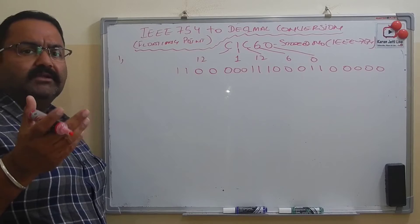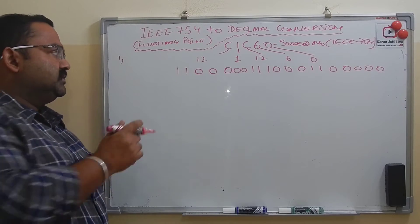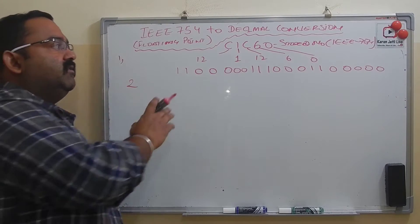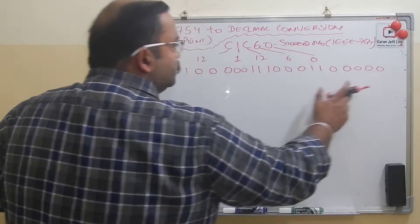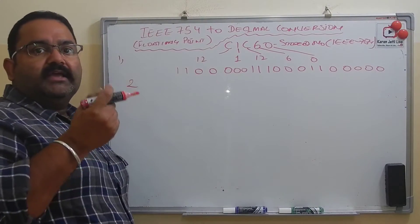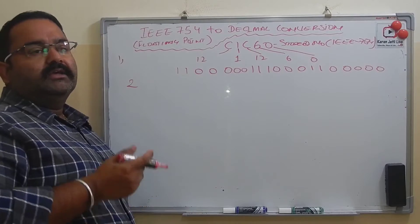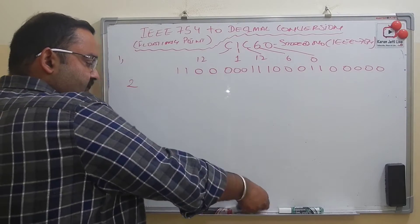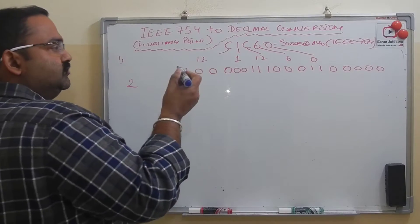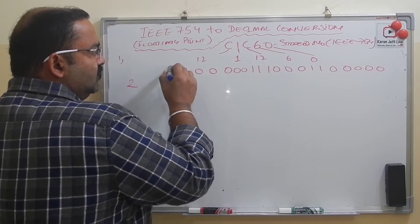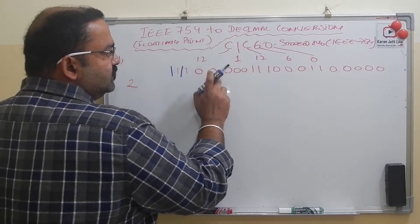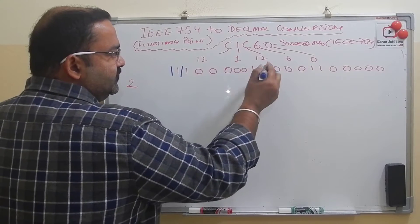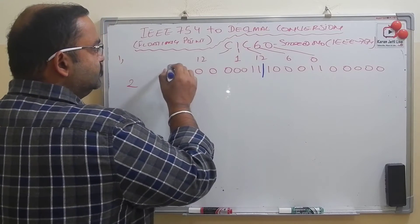Step two: divide these bits into groups of one, eight, and twenty-three. So I divided the bits: the first one bit, then the next eight bits, and the remaining twenty-three bits.